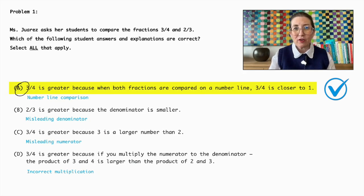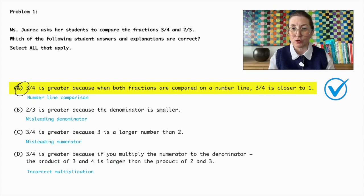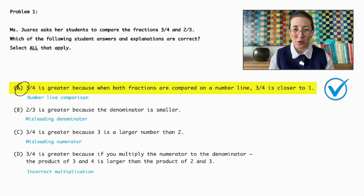The correct answer is Option A. Comparing fractions on a number line is a valid method to determine which is larger. By placing three-quarters and two-thirds on a number line, students can visually see that three-quarters is closer to one than two-thirds, thus confirming that three-quarters is greater.